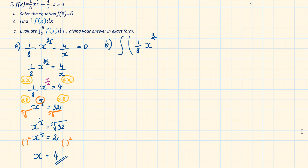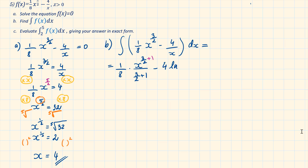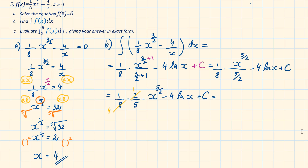Part B: find the integral of f(x). Integrating 1 over 8 times x to the power of 3 over 2 using the power rule gives 1 over 8 times x to the power of 3 over 2 plus 1, divided by the new power. Then integrating minus 4 over x gives minus 4 ln of x plus c. Because it is given that x is larger than 0, it's okay to ignore the absolute value brackets. After simplifying fully, the result is 1 over 20 times x to the power of 5 over 2 minus 4 ln x plus c.